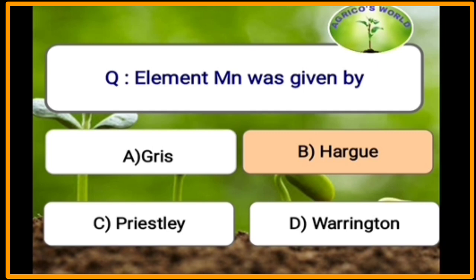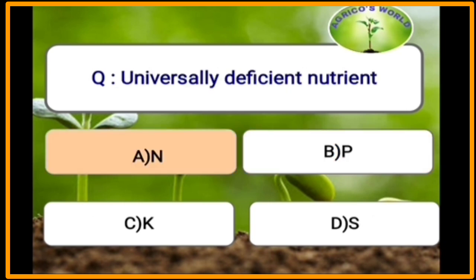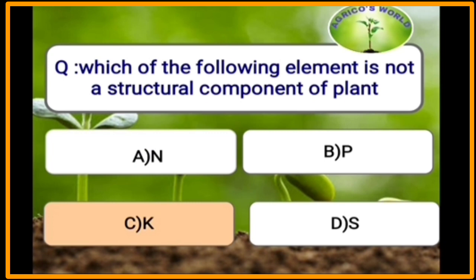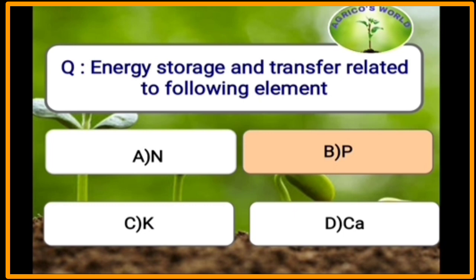The essentiality of element manganese was established by Hargue, iron essentiality was given by Gris, and boron essentiality was given by Warrington. The universally deficient nutrient is nitrogen. Potassium is the element which is not a structural component of plants.